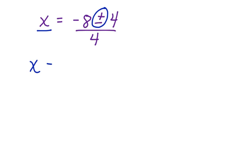So I'm going to write this two different ways. x equals negative 8 plus 4 divided by 4, and x equals negative 8 minus 4 divided by 4.